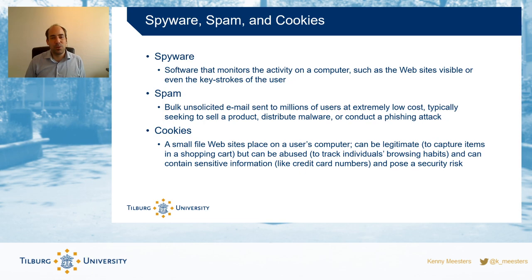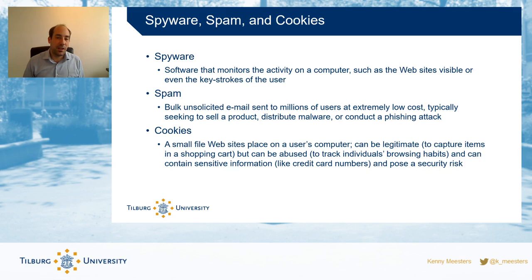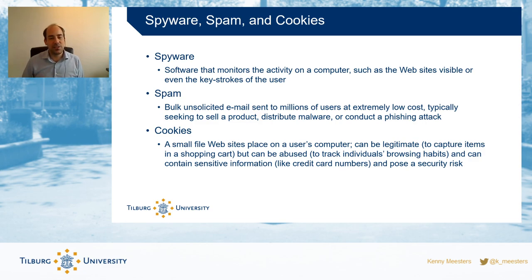Then there are cookies — small files stored on your computer that can store information from a website locally, such as which items are in your shopping cart. But cookies can also be used to track you across the internet. Facebook famously used cookies — and now uses browser fingerprinting — to track you across different websites. A website would check if that cookie is present and identify that as a Facebook user. Cookies can contain sensitive information and hinder your anonymity online.